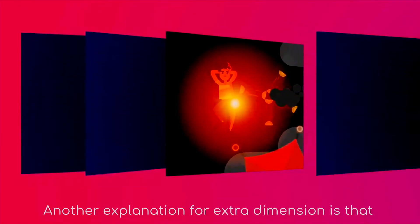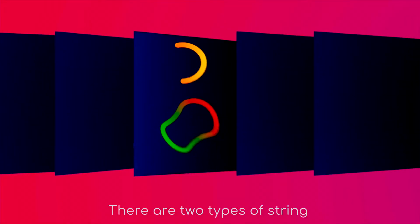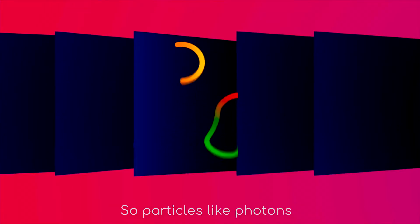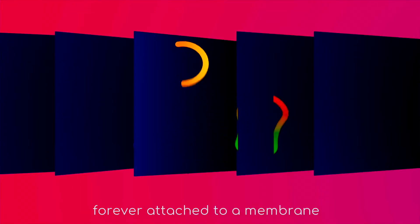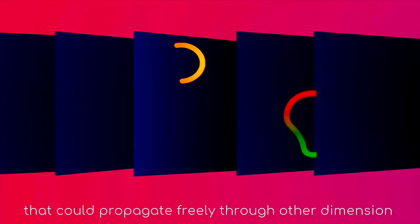Another explanation for extra dimensions is that we are stuck on a three-dimensional membrane. There are two types of string, open and closed. So particles like photons are strings that have their endpoints forever attached to a membrane, while graviton is a closed loop that could propagate freely through other dimensions. It might be an explanation why gravity is extremely weak.